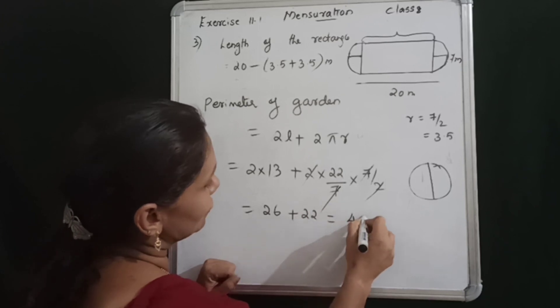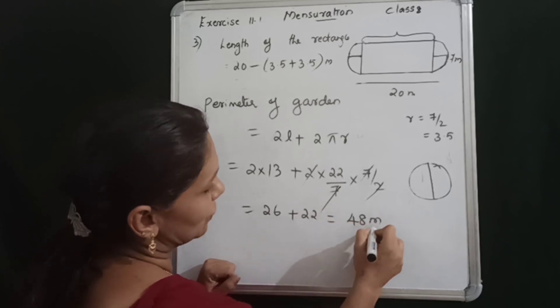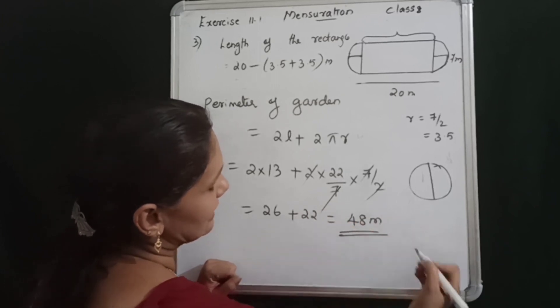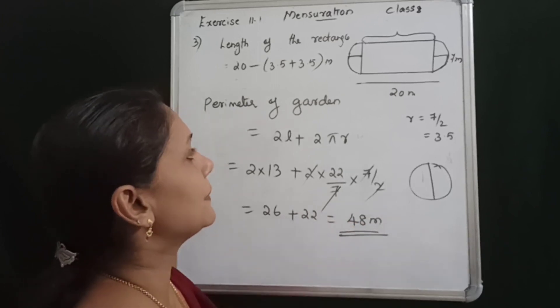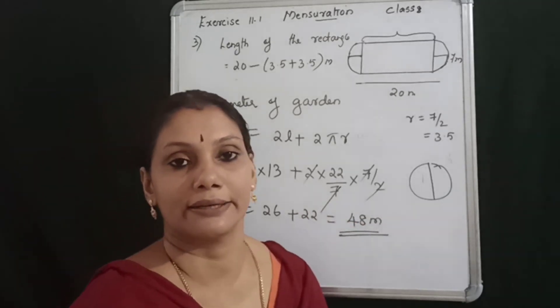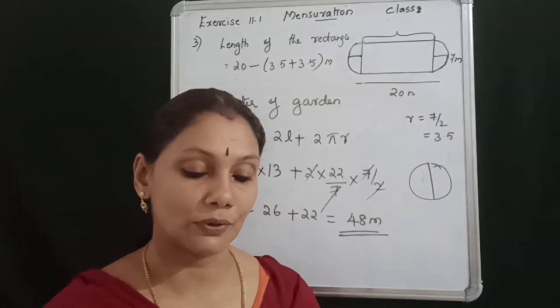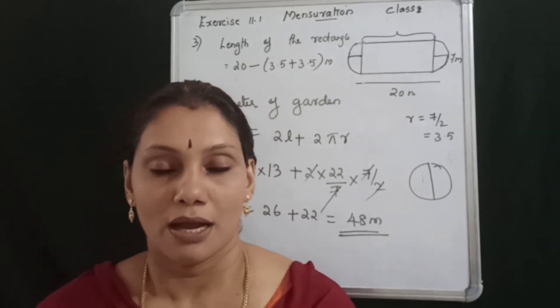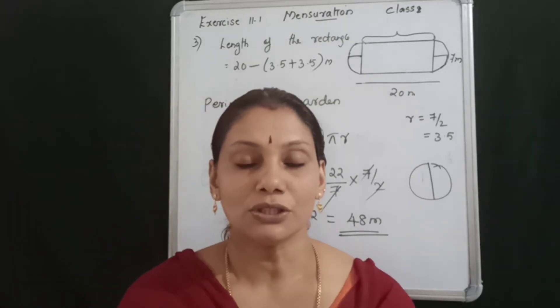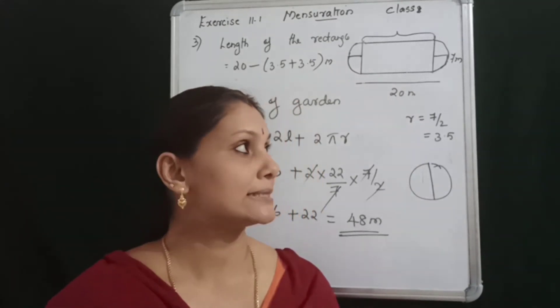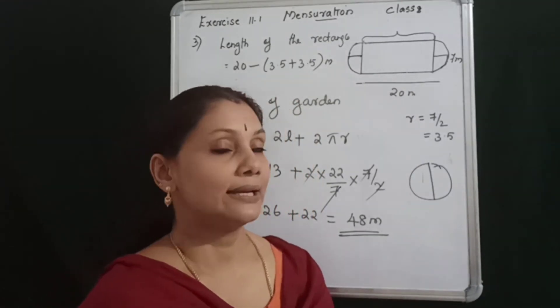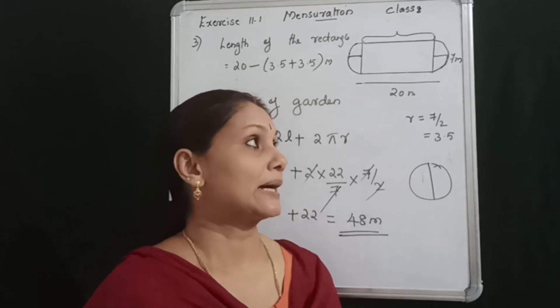48 meters. Perimeter of garden equals 48 meters. This is a question about the shape.